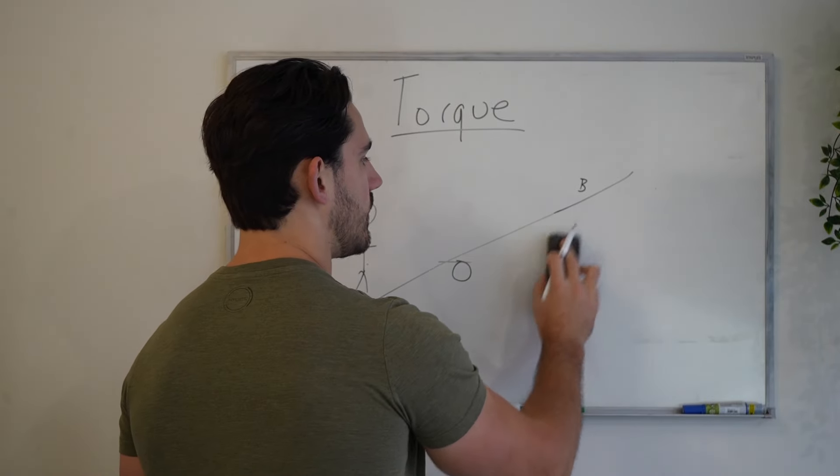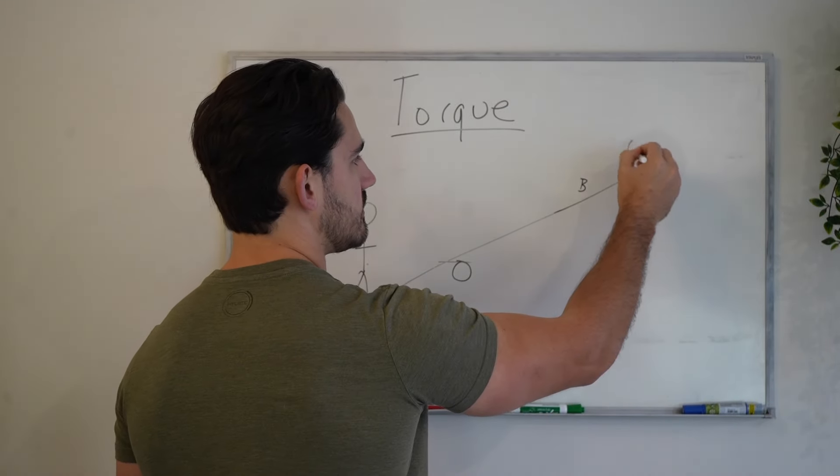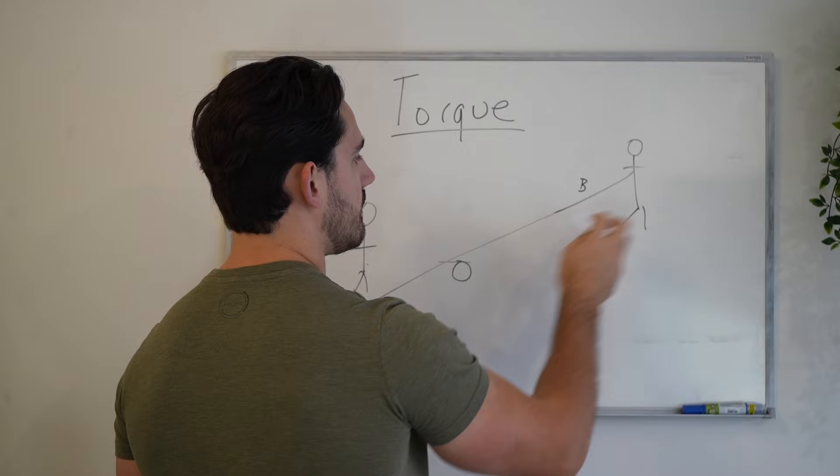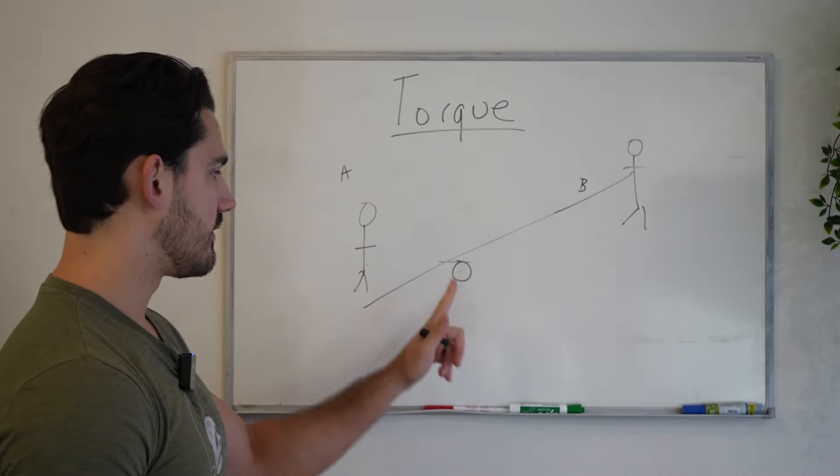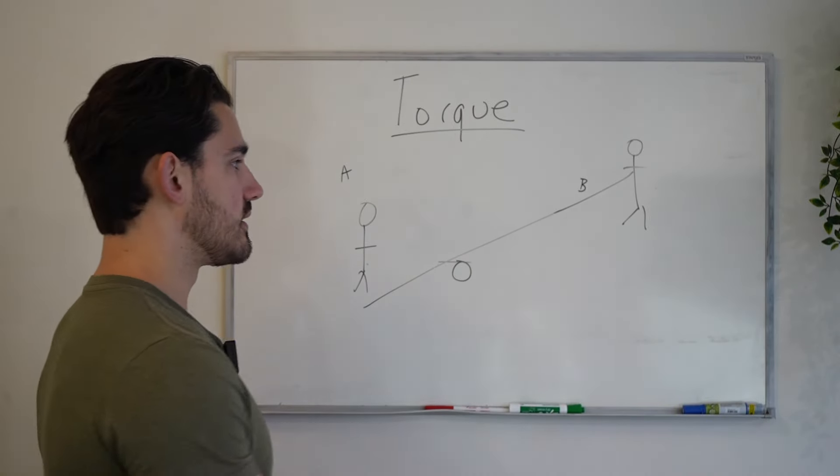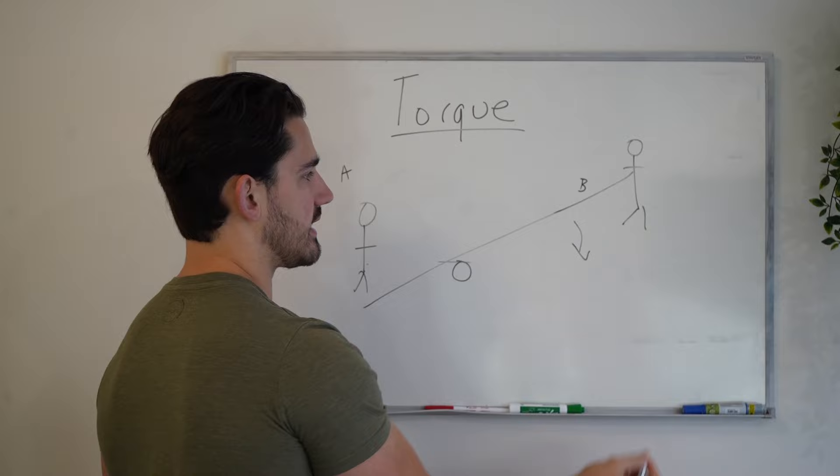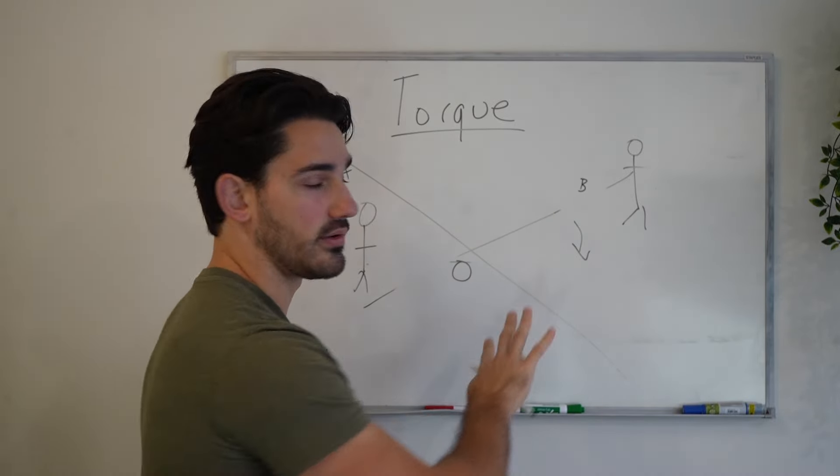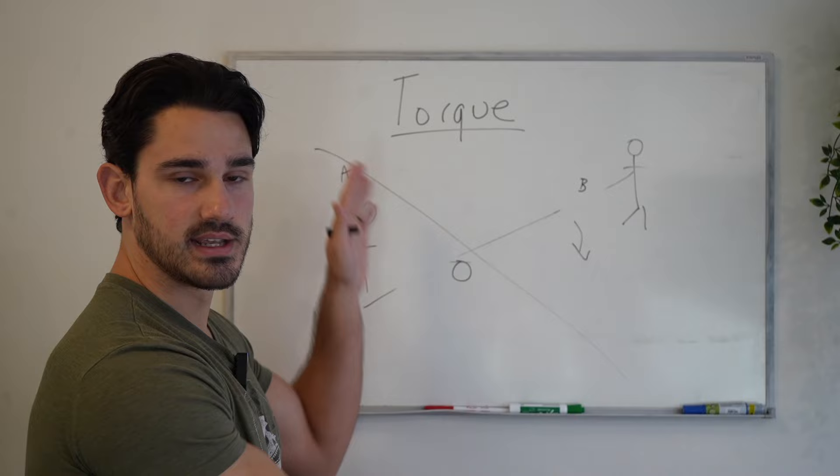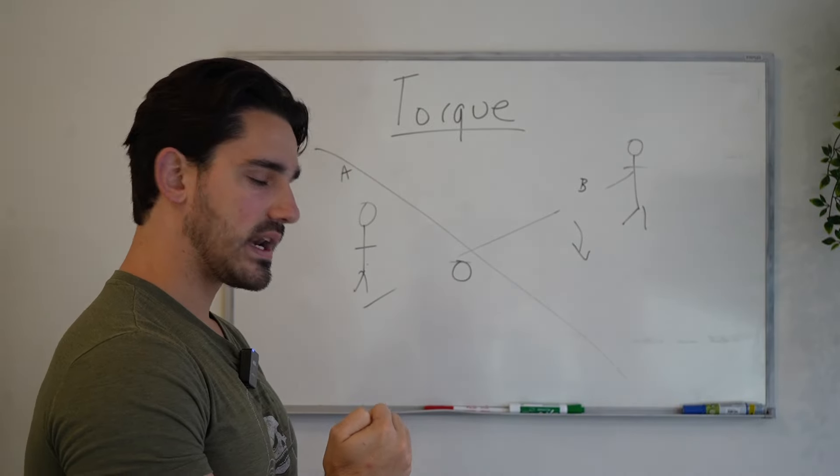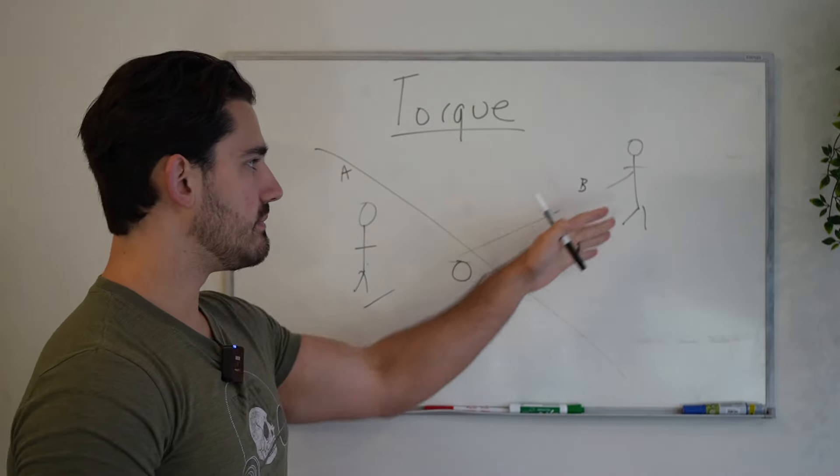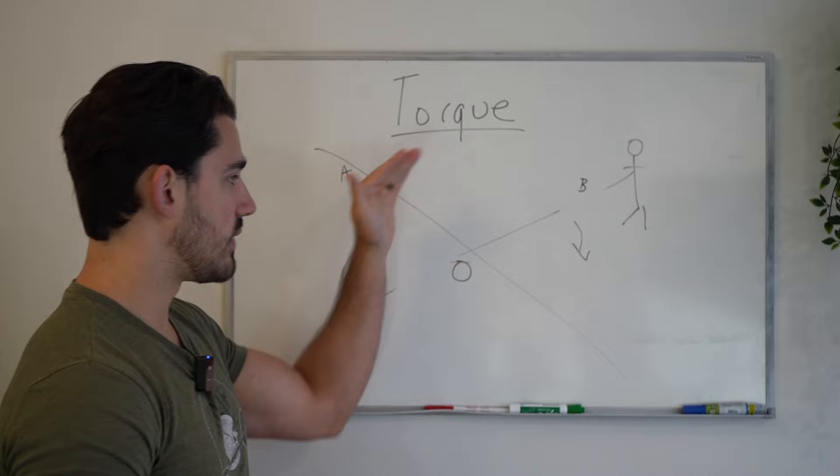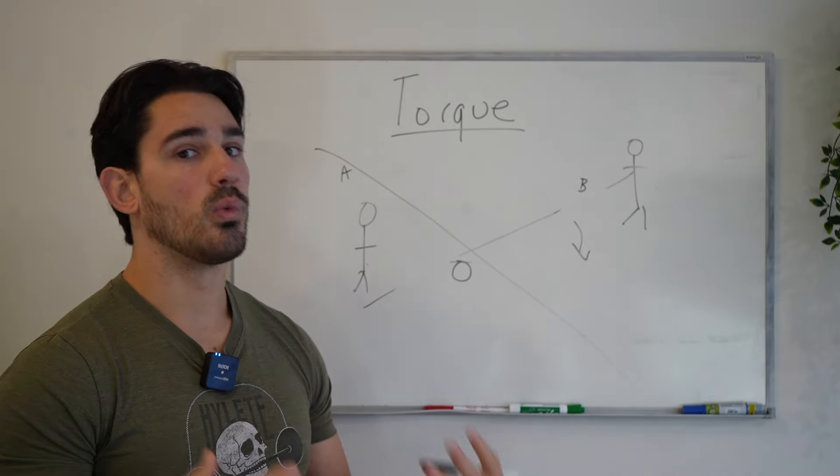So what happens? Well, his body weight gets distributed much farther away from where this center point is. So what happens immediately is this side goes down and boom, the seesaw tips all the way in the other direction. Let's just pretend those lengths made sense. So what happened here? Well, dude B basically found a creative way to weigh his side of the seesaw down.